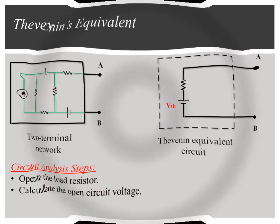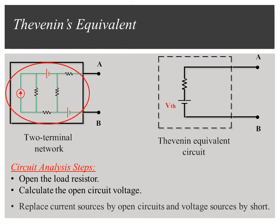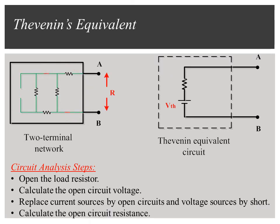Step 2: To find R-Thevenin, replace current sources by open circuits and voltage sources by short circuits, then calculate the open circuit resistance. This resistance represents R-Thevenin.